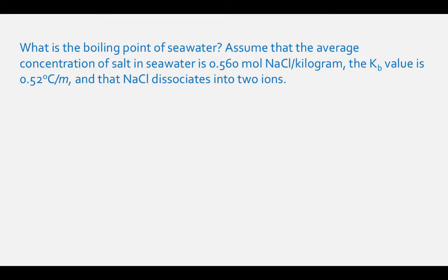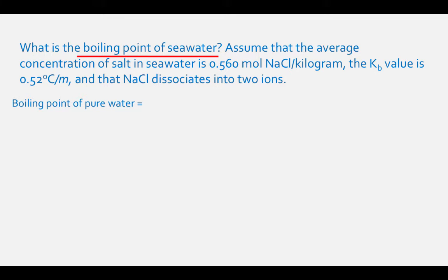What is the boiling point of seawater? Assume that the average concentration of salt in seawater is 0.560 mole NaCl per kilogram. The Kb value of the boiling point constant for water is 0.52 degrees Celsius per molal, and the NaCl dissociates into two different ions. The boiling point of pure water is 100.0 degrees Celsius. To calculate the boiling point of seawater, we need to calculate the boiling temperature change, which equals the Van't Hoff factor times the molality of the solute times Kb, and add it to the boiling point of pure water.